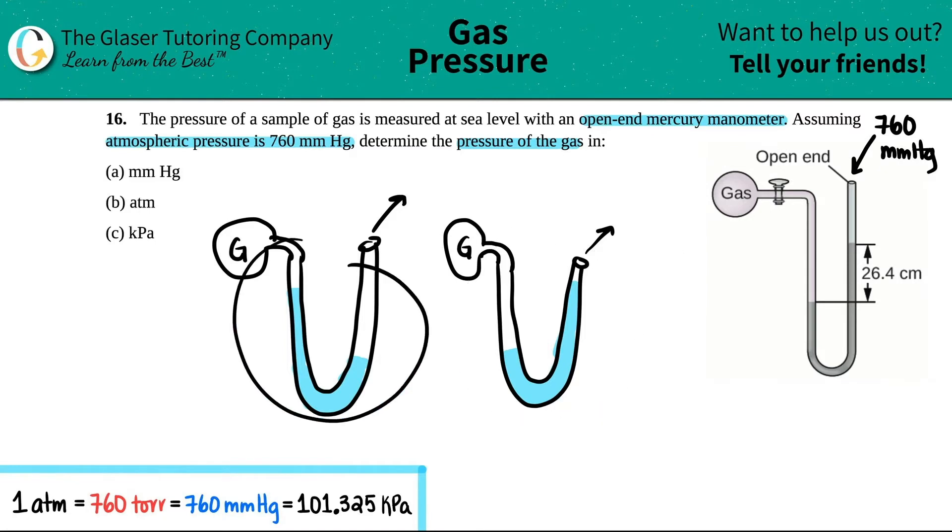Going by what our picture is here, which scenario are we in? Yeah, we're on this one. In which the right side, the one that's with the atmosphere is higher than the gas side. So hopefully you see that.